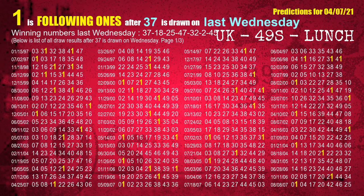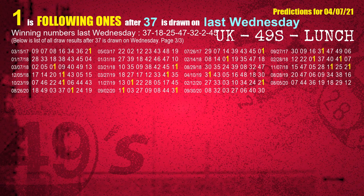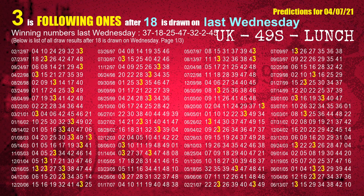After calculating following ones from today's result, we find out following ones through the result of the same day last week. The first winning number last Wednesday is 37. We list all draw results which are one week after a Wednesday draw with 37 as a winning number — the most frequently following units digit is 1. We also highlight units digit 1 in yellow. The second winning number last Wednesday is 18 — the most frequently following units digit is 3.